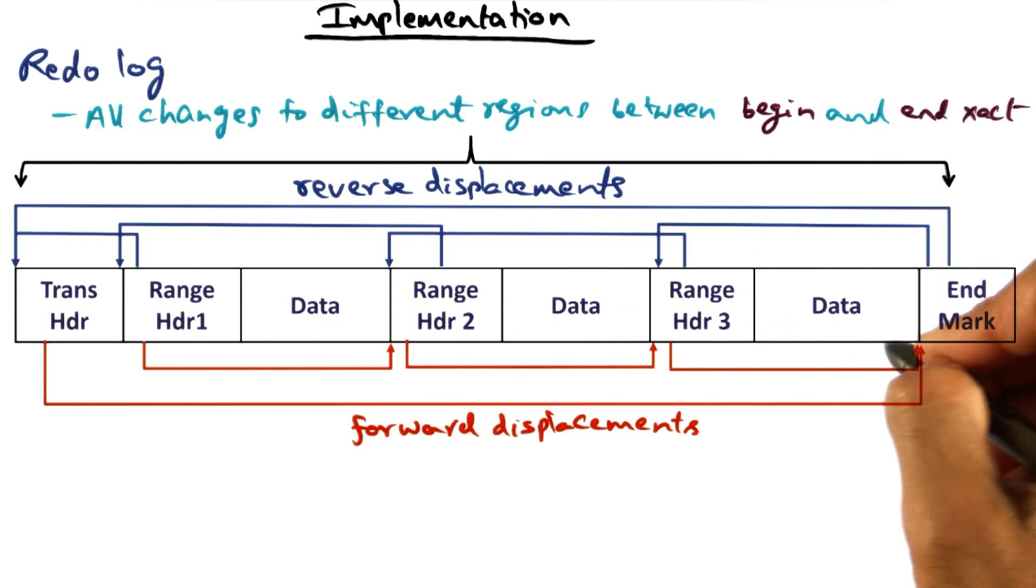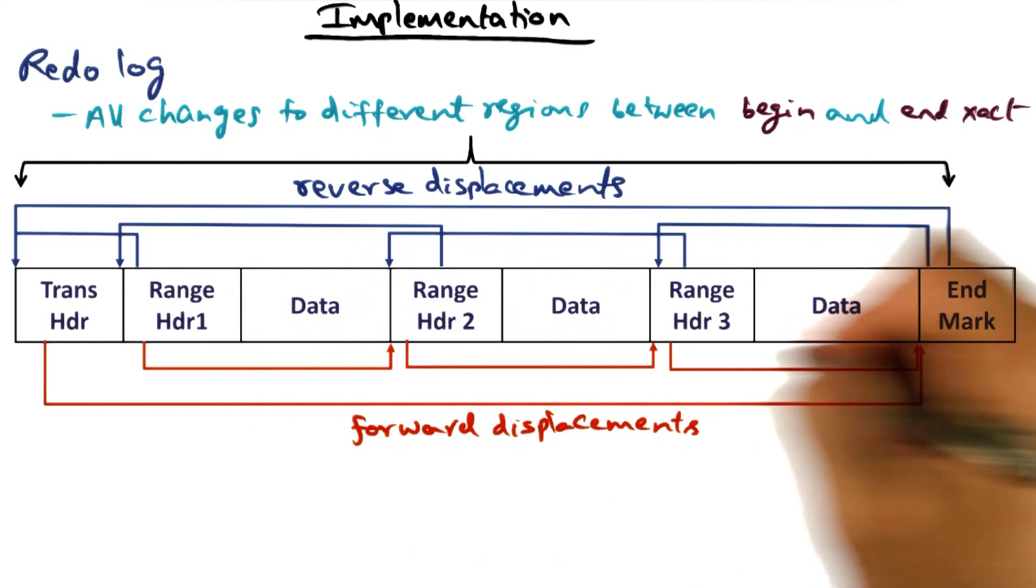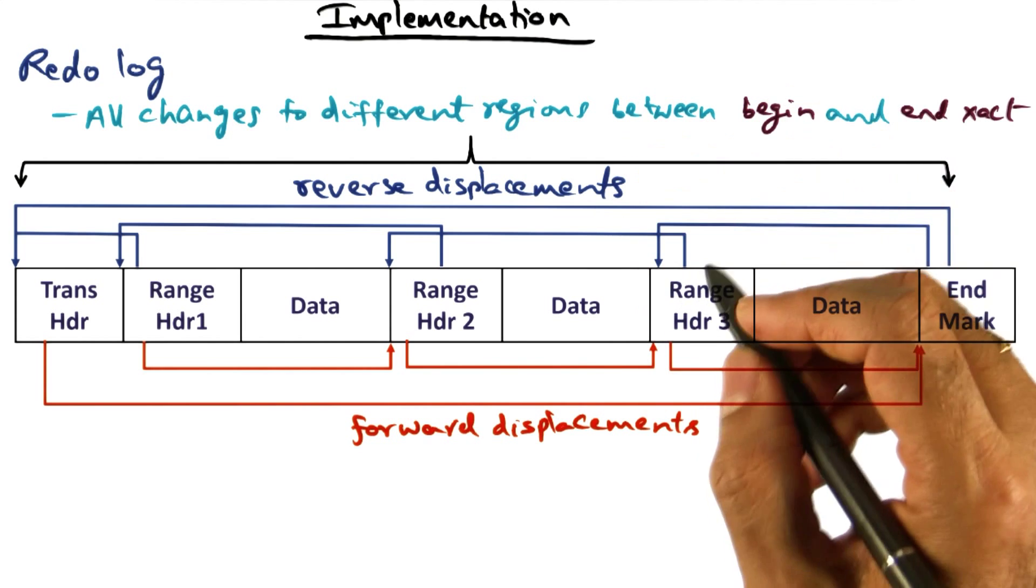There's an in-memory version of the log segment to which you're writing the redo logs. Once you've written the redo logs, you're flushing it to the disk. On the disk, you have an on-disk version of this redo log record for this particular process.